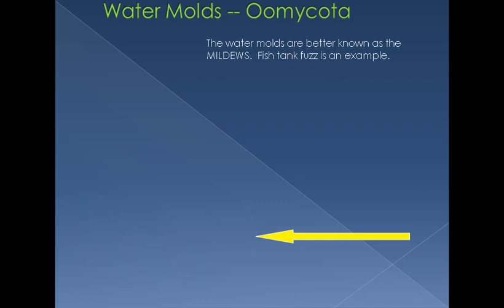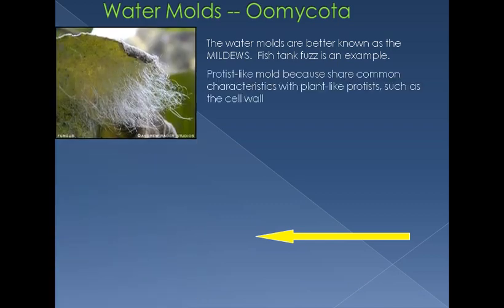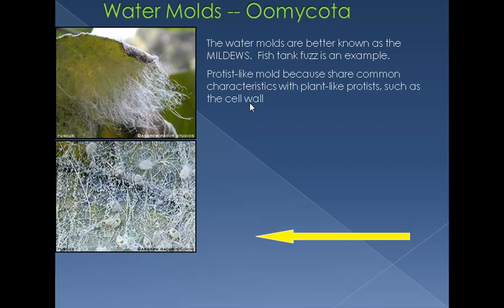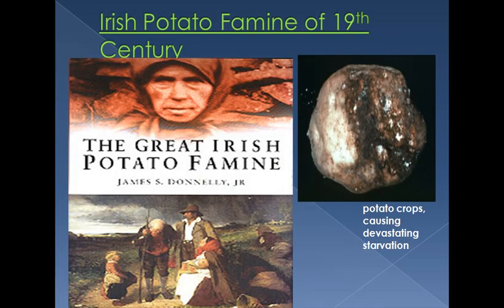Water molds can also be seen as fuzz on fish in fish tanks. They share common characteristics with plant-like protists since water molds have a cell wall — this is a very important feature and is why they are considered plant-like. The Irish Potato Famine of the 19th century was caused by water molds destroying potato crops, causing devastating starvation, as potatoes form a major part of the food of the whole world.